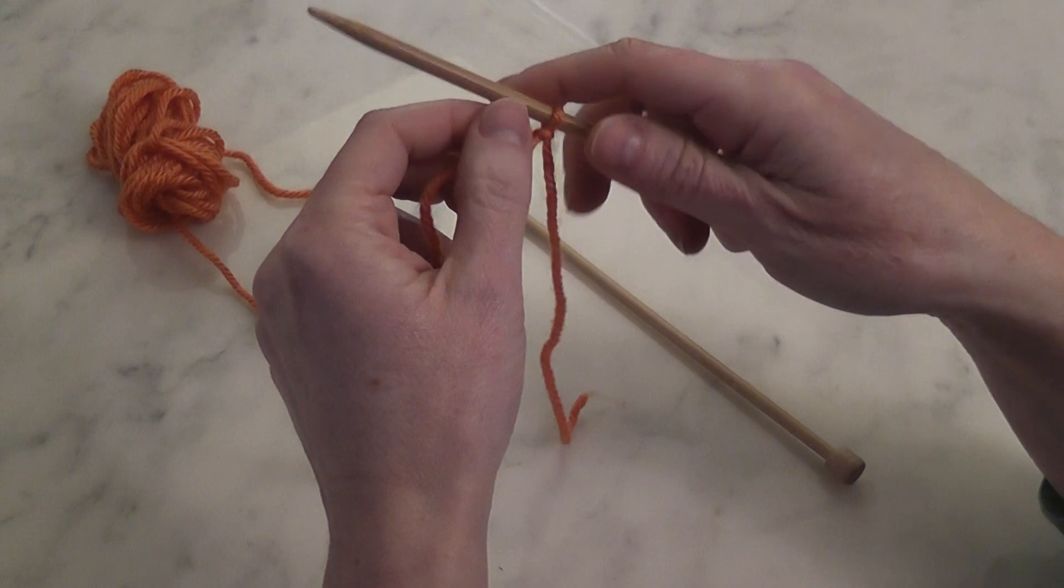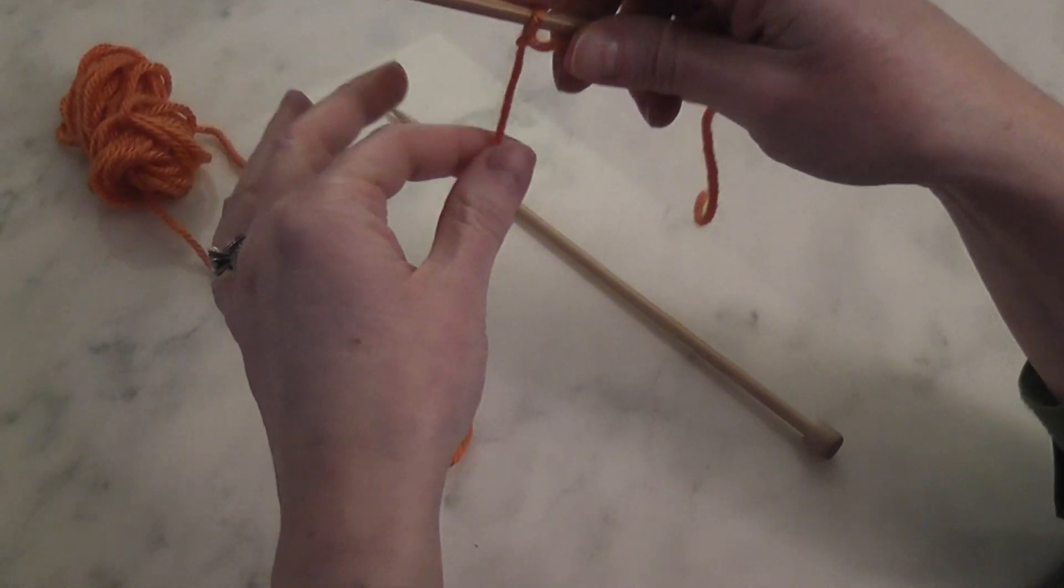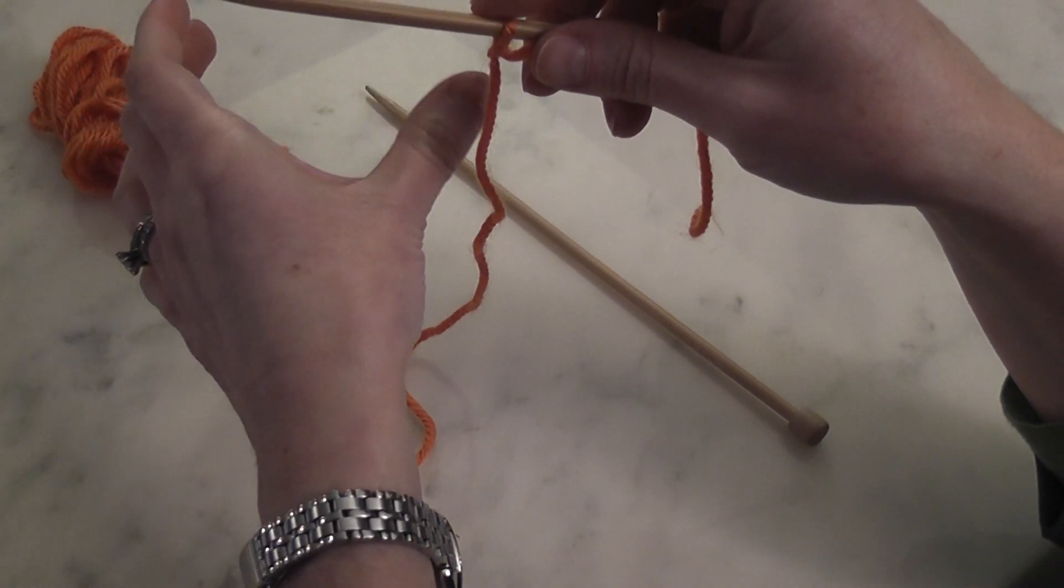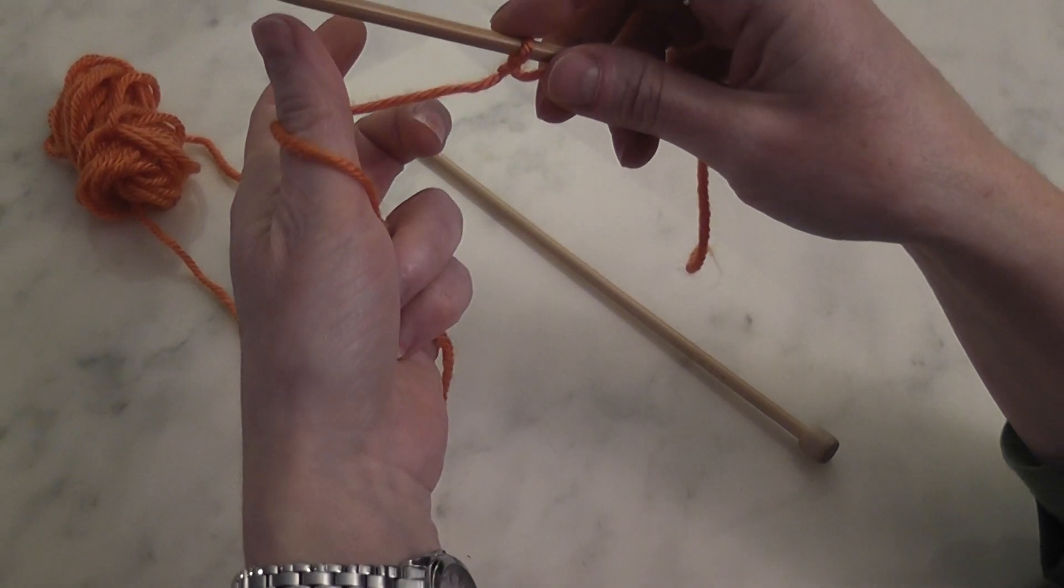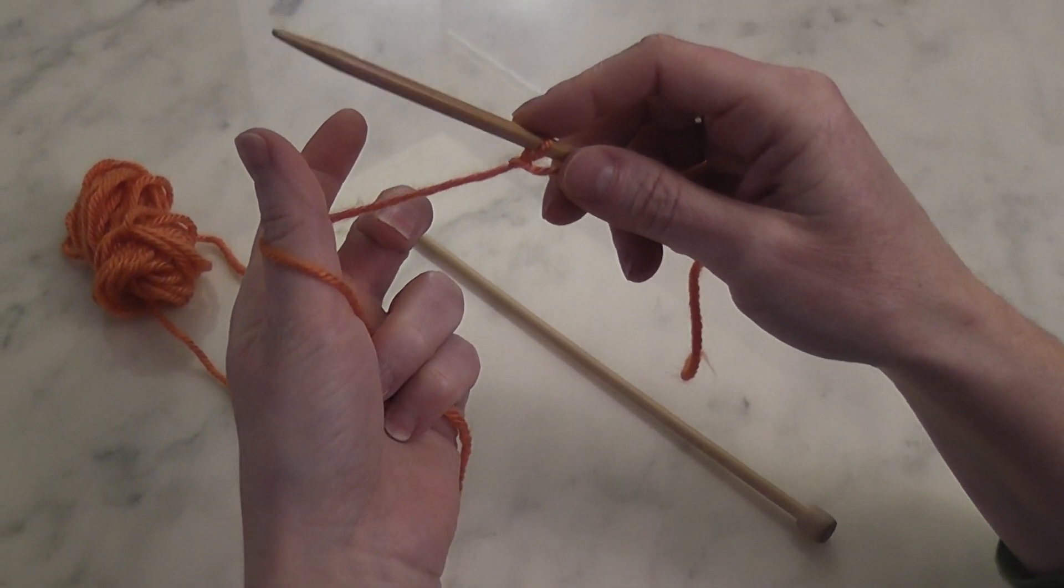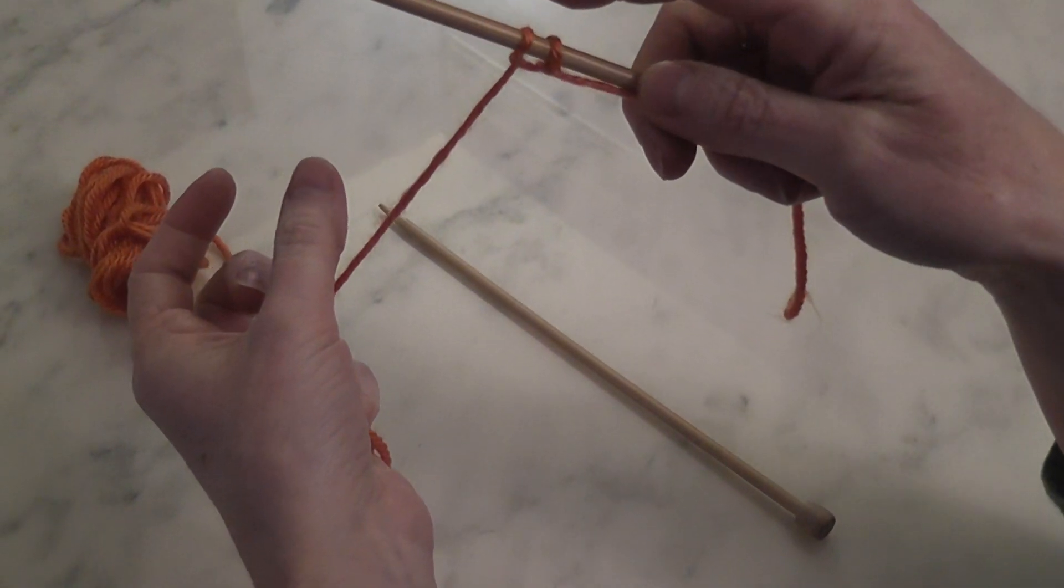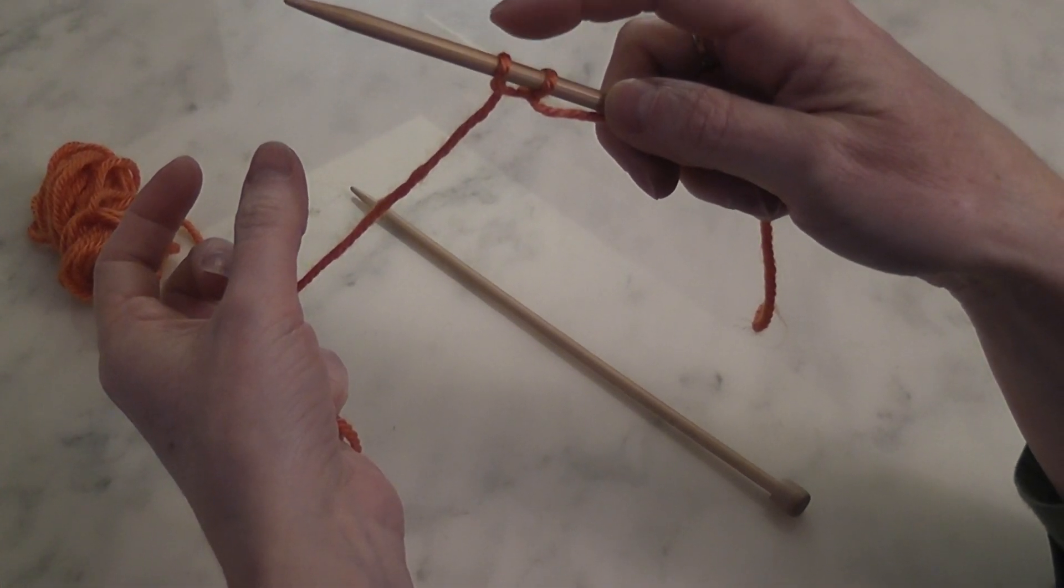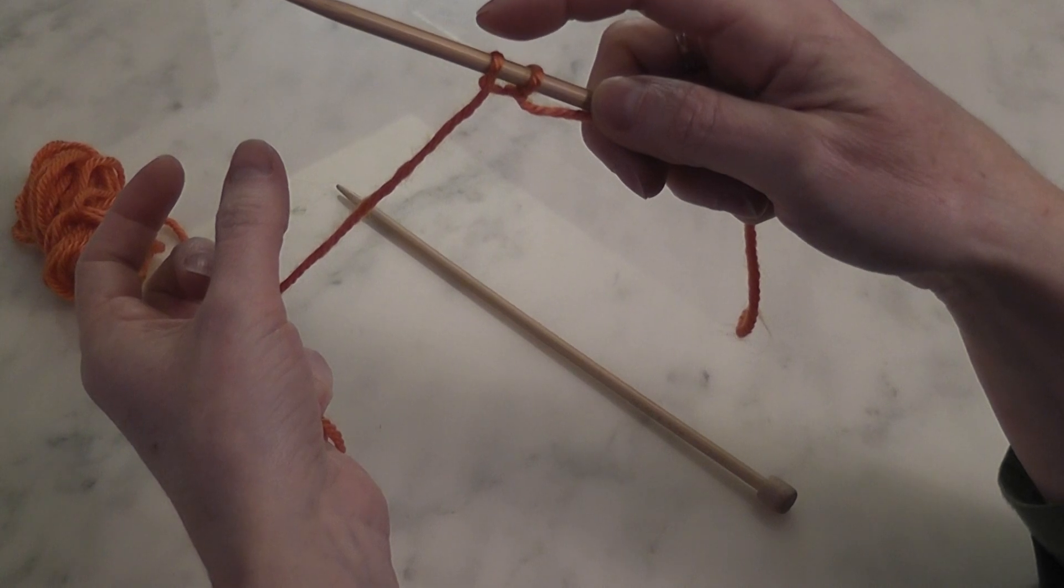So you'll put your slip knot on your needle, holding your tail out of the way. Your working yarn is now hanging down, and you want to take your thumb behind the yarn and grasp the working yarn with your pinky and ring finger, taking your needle and putting it under the loop that you now created with your thumb. You now have two stitches on the needle. The first one was your slip knot. The second one is the one that you created with your E or Backward Loop Cast On.